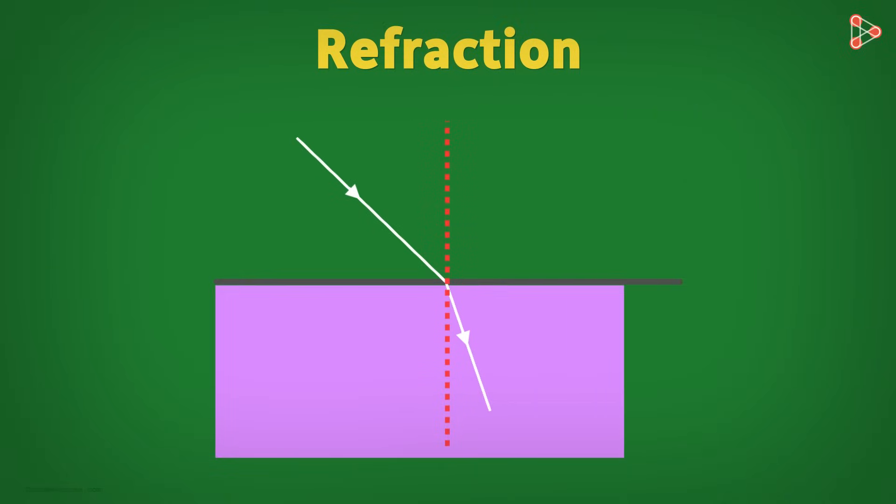If the refractive medium is optically denser compared to incident medium, then the refracted ray will bend towards the normal. And if it is optically rarer, it will bend away from the normal.